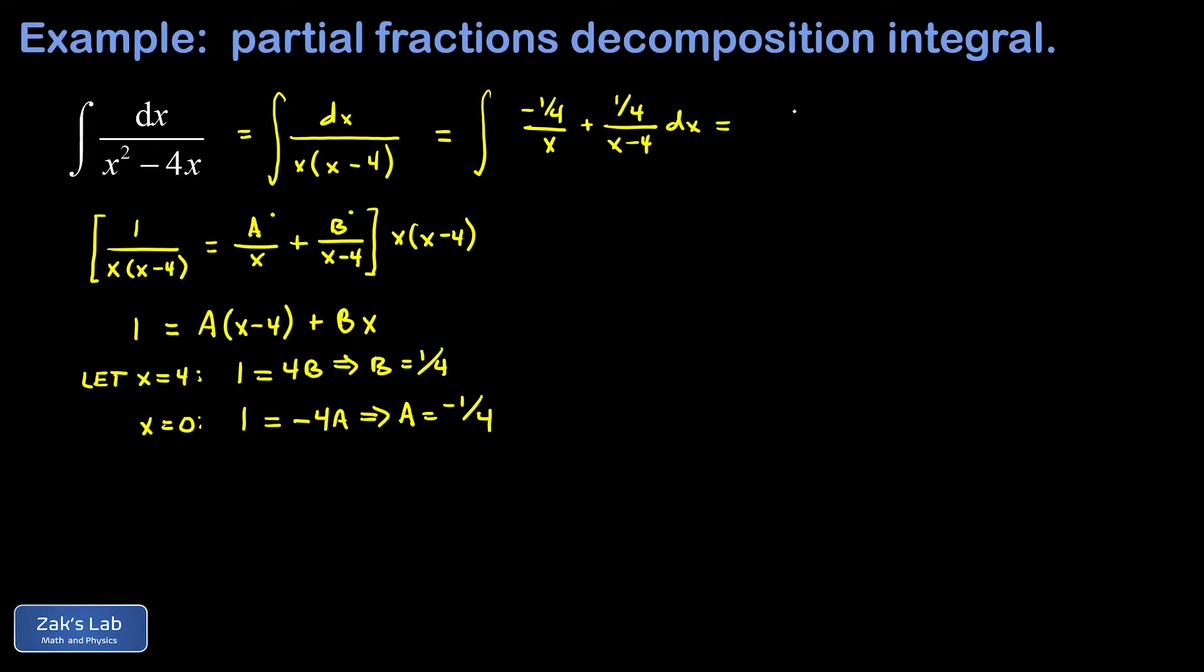Each of those is a basic natural log integral. If I integrate 1 over x, I get the natural log of the absolute value of x, so I have negative 1 fourth natural log absolute value of x. If I integrate 1 over x minus 4, that's just the natural log of the absolute value of x minus 4, so I get plus 1 fourth natural log of the absolute value of x minus 4. We'll put a plus c on there and that's it.